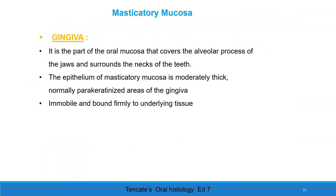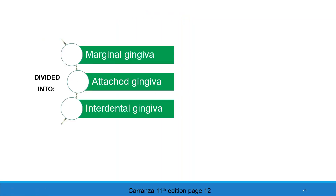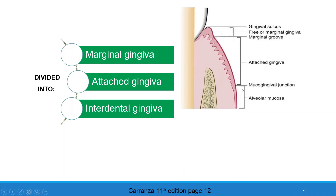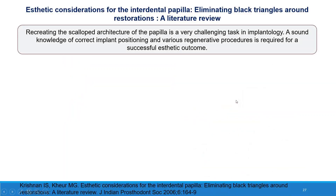Masticatory mucosa. Gingiva is the part of oral mucosa that covers the alveolar process of the jaw and surrounds the neck of the teeth. The epithelium of masticatory mucosa is moderately thick and normally parakeratinized in gingival areas. It is immobile and firmly bound to the underlying tissue. The gingiva can be divided into marginal gingiva, attached gingiva, and interdental gingiva. Aesthetic consideration of interdental papilla — eliminating black triangles — requires sound knowledge of implant positioning and regenerative procedures for successful aesthetic outcome.